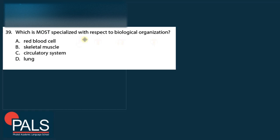Question 39: Which is most specialized with respect to biological organization? A red blood cell is a single specialized cell. Skeletal muscle is a tissue — the next level of organization. The lung is an organ, the level after tissue. The circulatory system is an organ system — the highest level here. However, the question asks which is most specialized: a red blood cell is the most specialized single unit, while the circulatory system has the highest organization. The correct answer is C, the lung — actually the progression goes cell → tissue → organ → organ system, with C being the lung (organ). Correct answer is C.